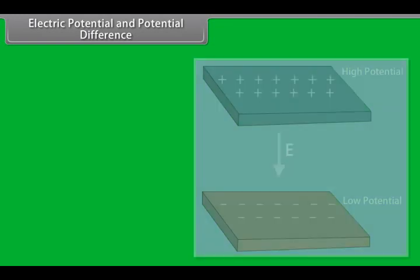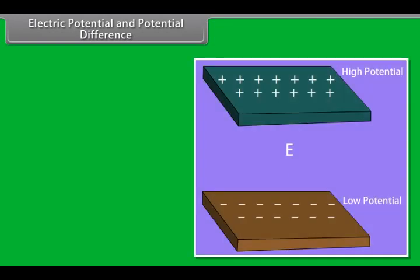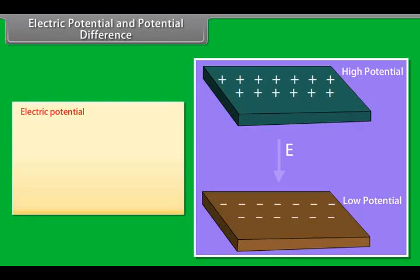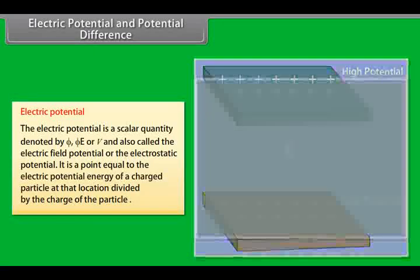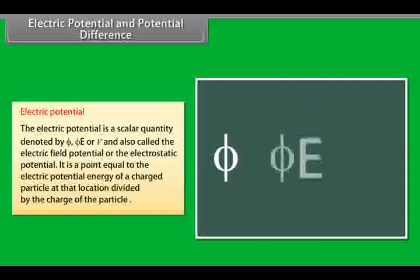Electric potential and potential difference. Let us look at the concepts of electric potential and potential difference. Electric potential. The electric potential is a scalar quantity denoted by φ, E, or V, and is also called the electric field potential or the electrostatic potential. It is a point equal to the electric potential energy of a charged particle at that location divided by the charge of the particle.